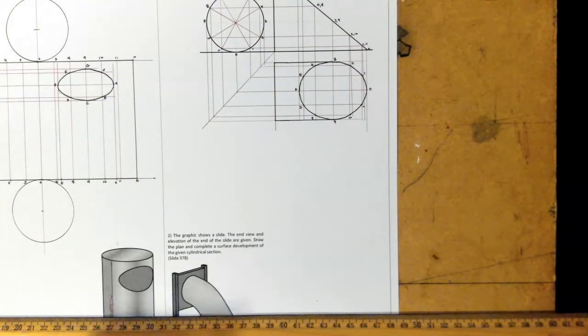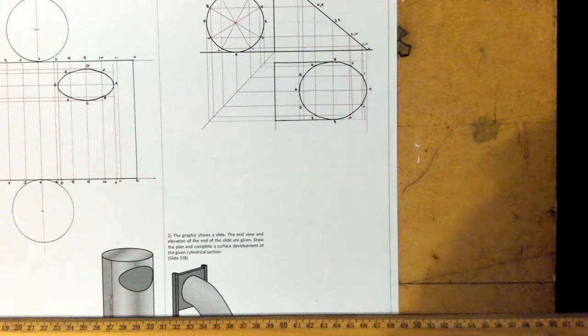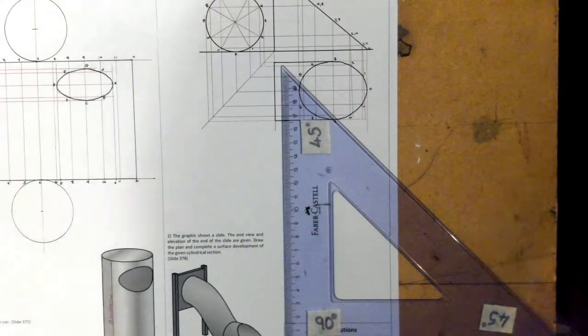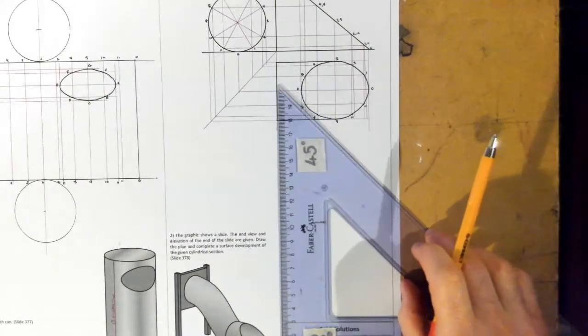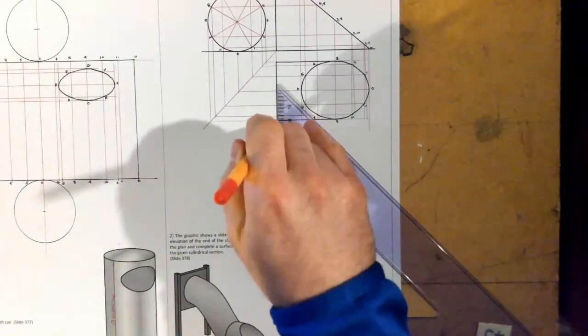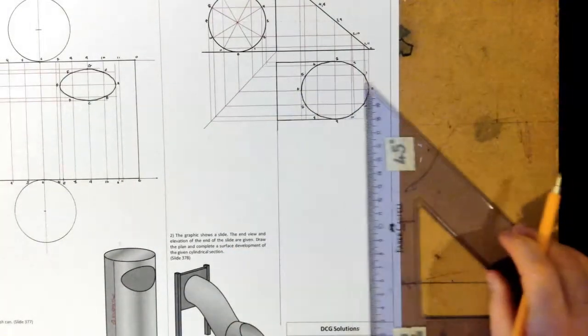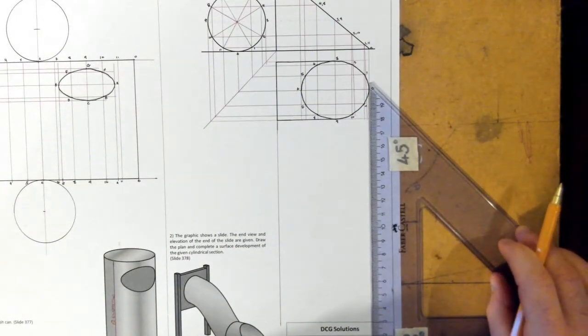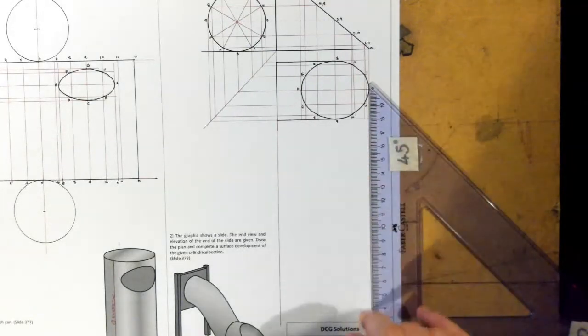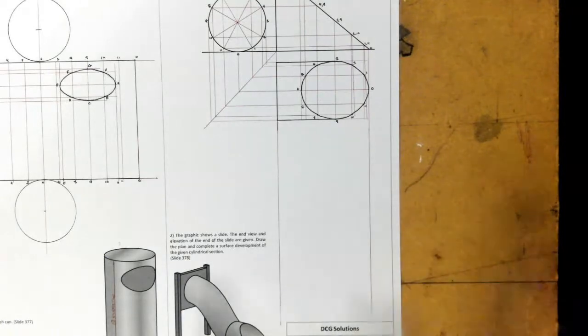Very much like the last question, have a cylinder, what are we going to do? We're going to roll it out. So, to be able to do that, same as the last question, start off. When a cylinder rolls out, it's going to look like a rectangle. In this case, our rectangle has been cut.